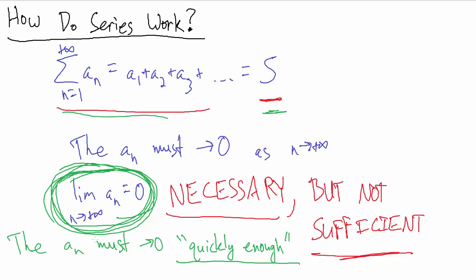Just knowing this is not enough to say that the series converges. Not only does this have to be true, but a sub n also has to go to 0 quickly enough. And what does quickly enough mean? Again, that's the part that's hard to quantify — it differs depending on what type of series we're talking about. We'll see examples in future videos.